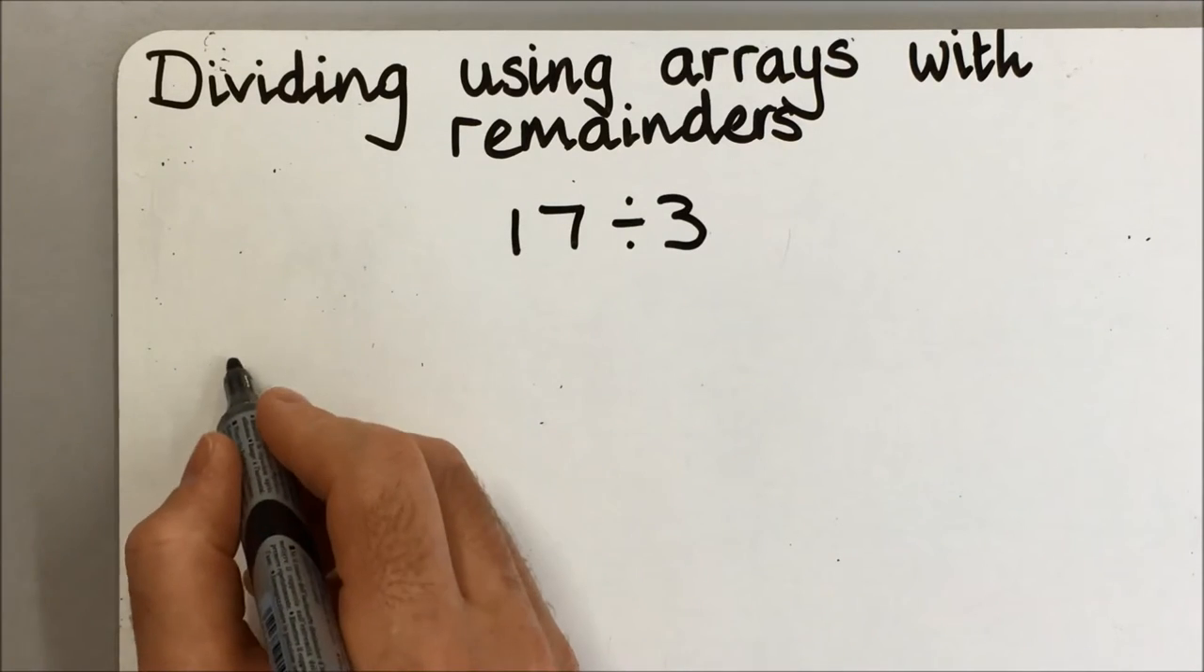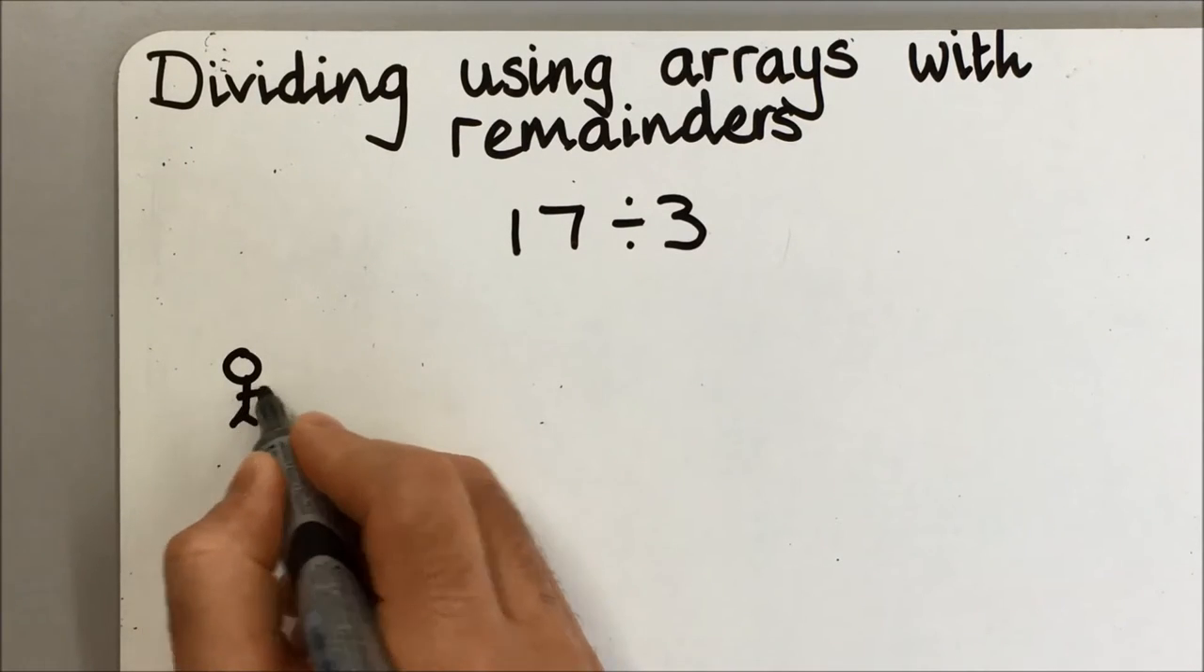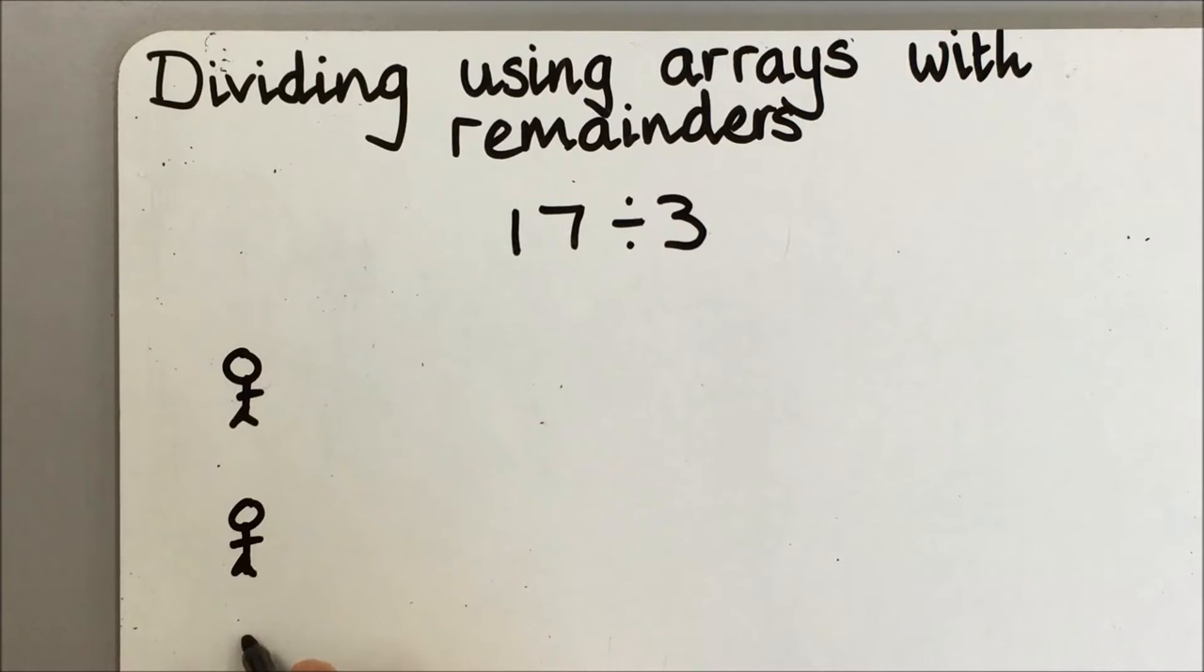So the children should know that they need 3 little people, 3 groups, and that they're sharing 17 out between them.